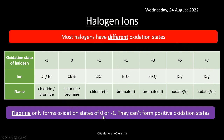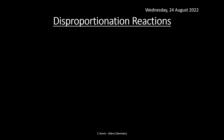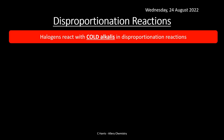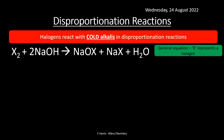Disproportionation reactions: halogens react with cold alkalis in disproportionation reactions. In the general equation, X₂ reacting with sodium hydroxide forms sodium halate, sodium halide, and water. The ionic equation removes spectator ions such as sodium. A disproportionation reaction involves simultaneous reduction and oxidation of the same element — the halogen starts at oxidation state 0, is oxidized to +1 in the halate, and reduced to −1 in the halide.